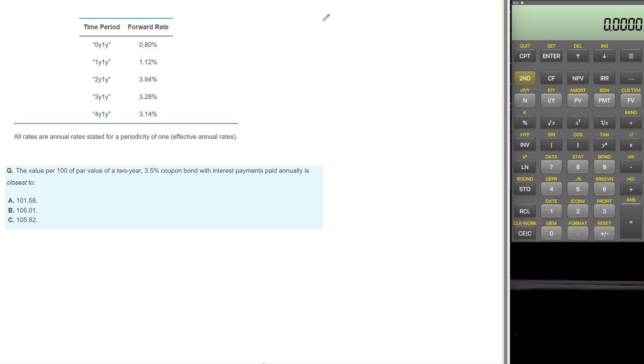All rates are annual rates stated for a periodicity of 1, effective annual rate. The question is, what is the value per 100 of par value of a 2-year 3.5% coupon bond with interest payments paid annually?